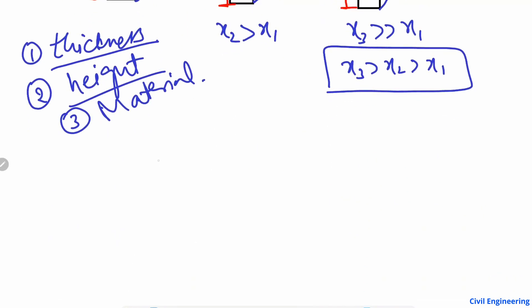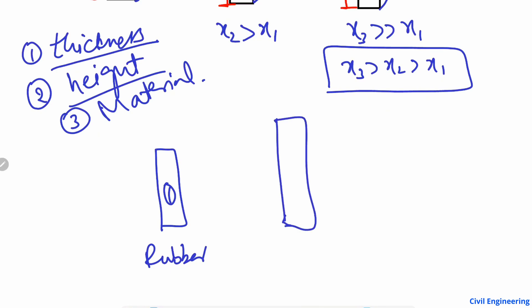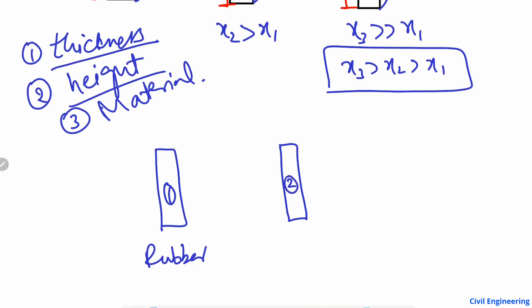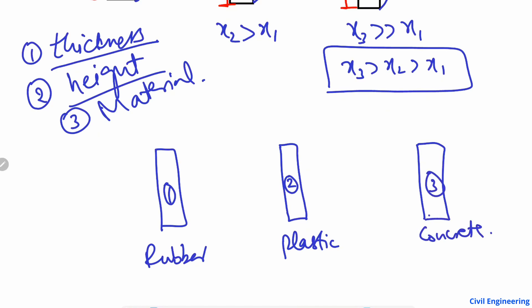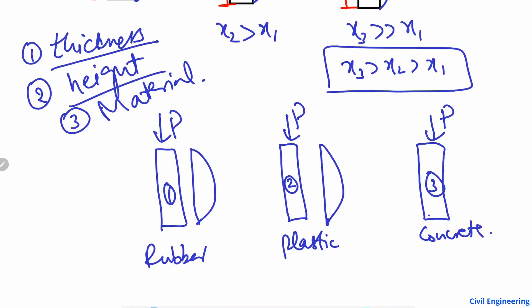The third parameter is the material. Consider one column made of rubber, a second of the same height and geometry made of plastic, and a third made of concrete. When the same load P is applied to all three, the rubber will show very high deformation, the plastic will show lower deformation, and the concrete will show very low deformation.